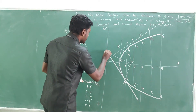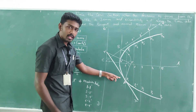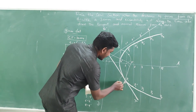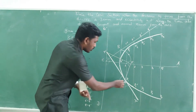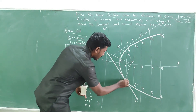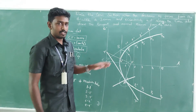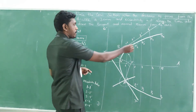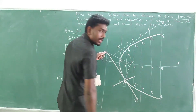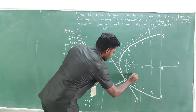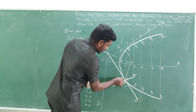Now draw the normal. It is simply a 90-degree line to the tangent. Keep your protractor, make P the center, measure 90 degrees, and draw a dark line — that is your normal N-N'. As far as conic curves are concerned, always three lines should be dark: the profile curve, the tangent, and the normal.